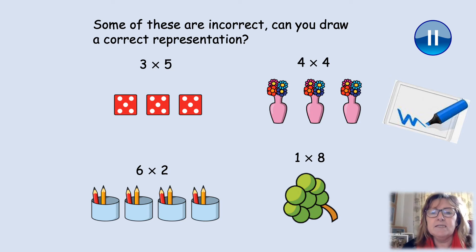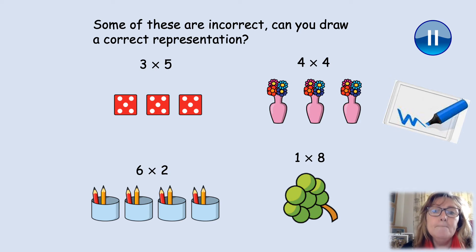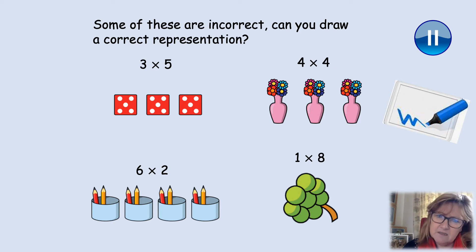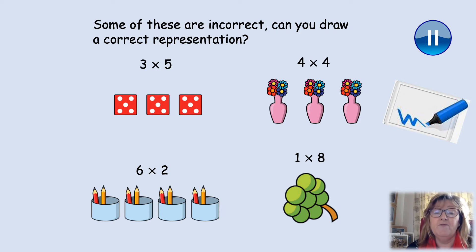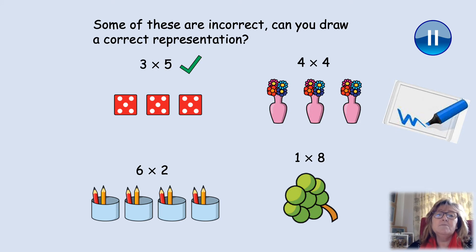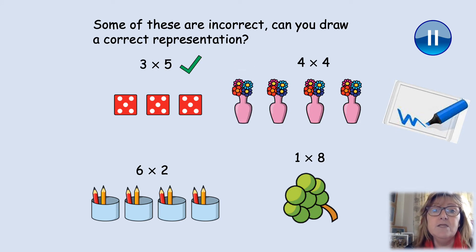The second one — what does that say? Four times four. Four multiplied by four. Well, we've got four flowers in each vase. Have we got four vases? We haven't, have we? We need to have another group of four. At the moment we've only got three groups of four, so that equation would be three times four. To make it correct, we need another vase to make it four times four.